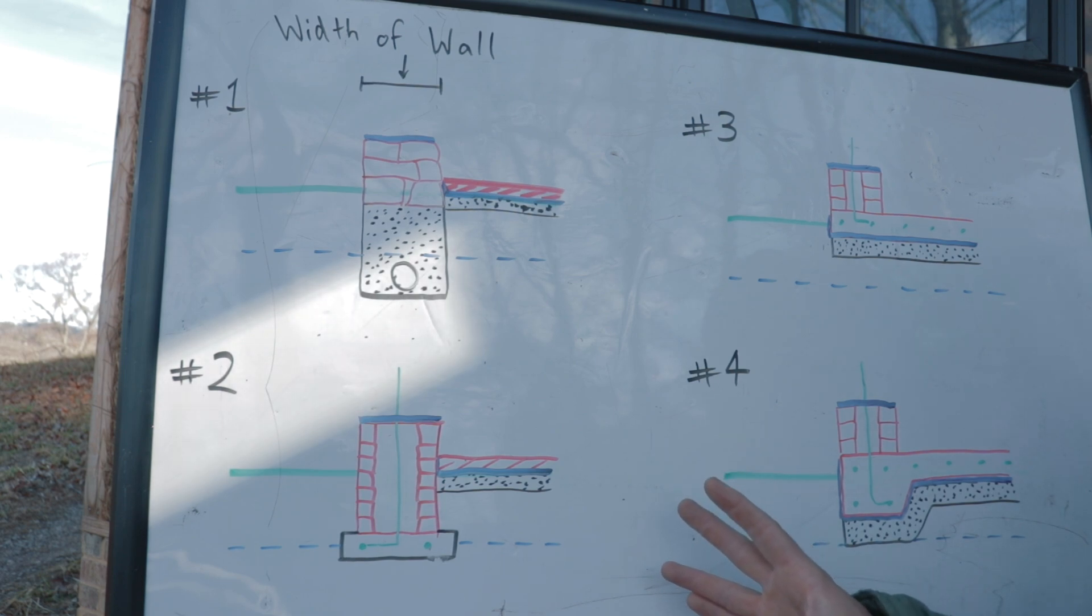I want you to see all these little details. We're going to talk about foundations in this video, specifically for cob structures, but this also applies to adobe, rammed earth, straw bale, straw clay, hempcrete, conventional construction, pretty much anything.